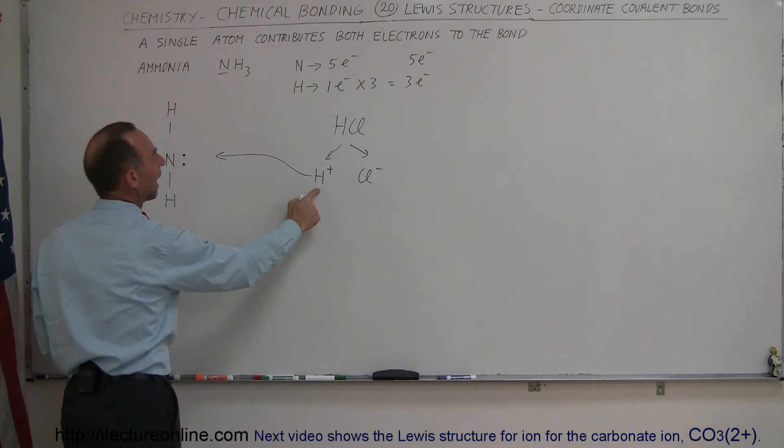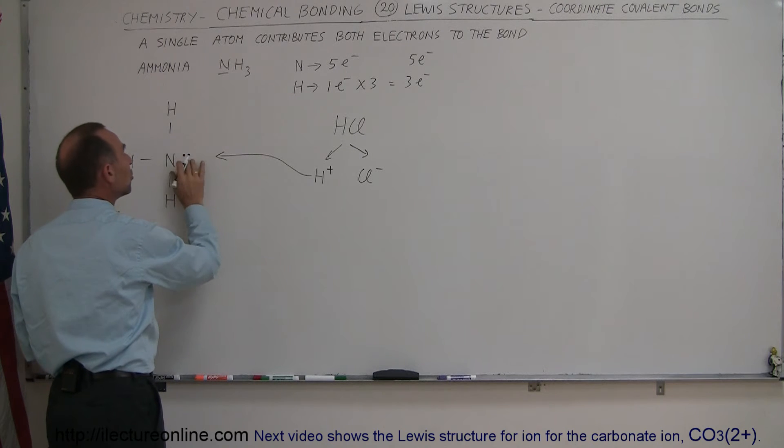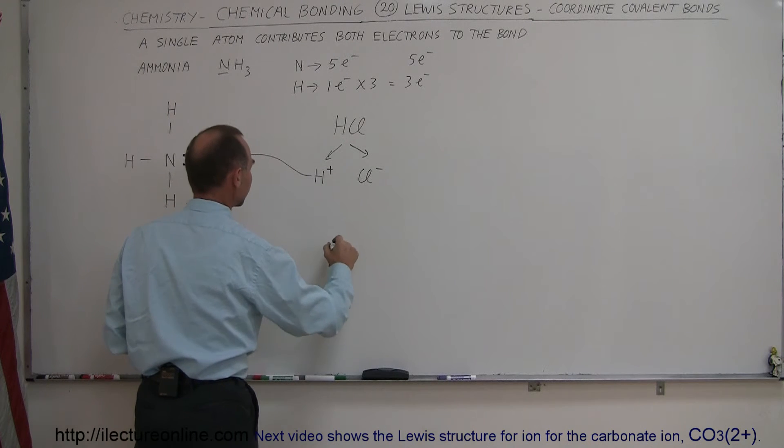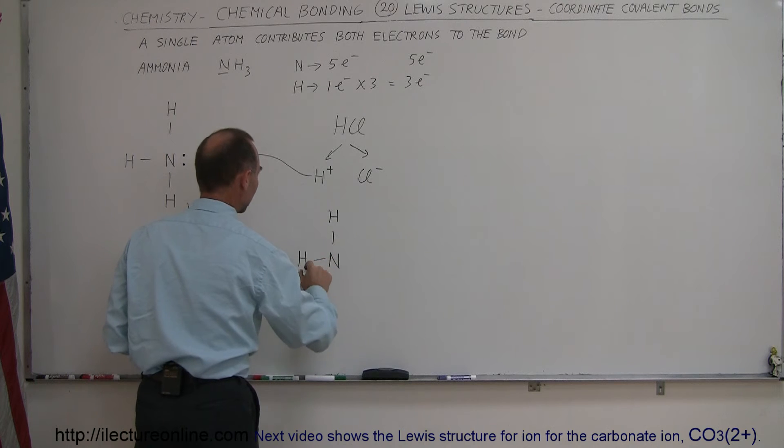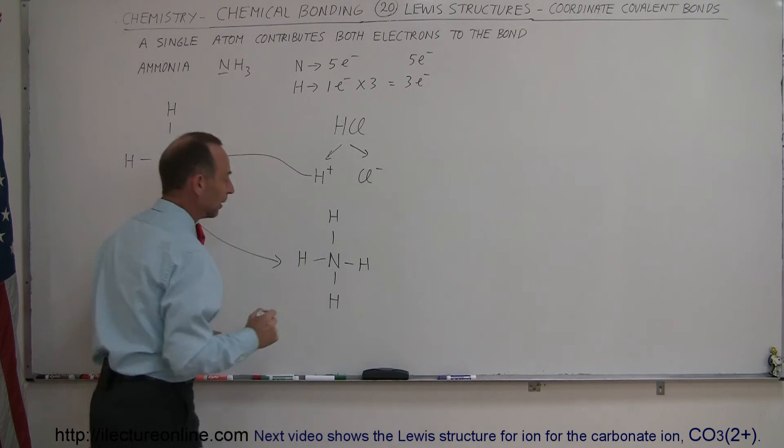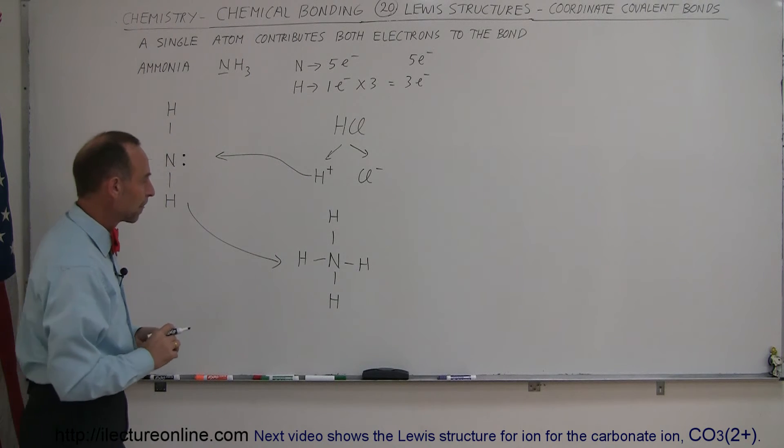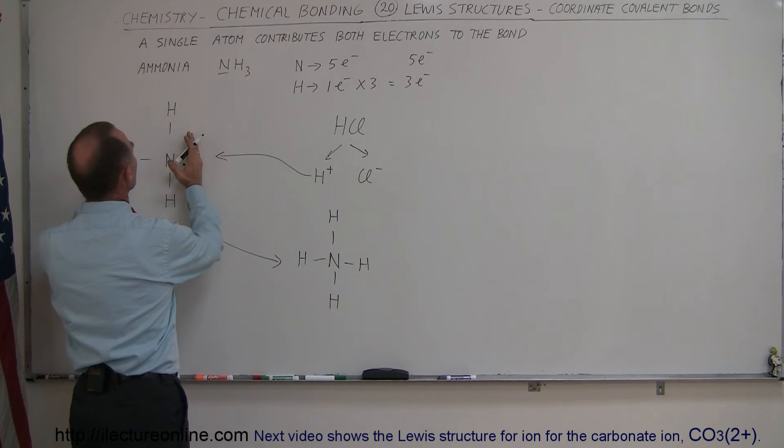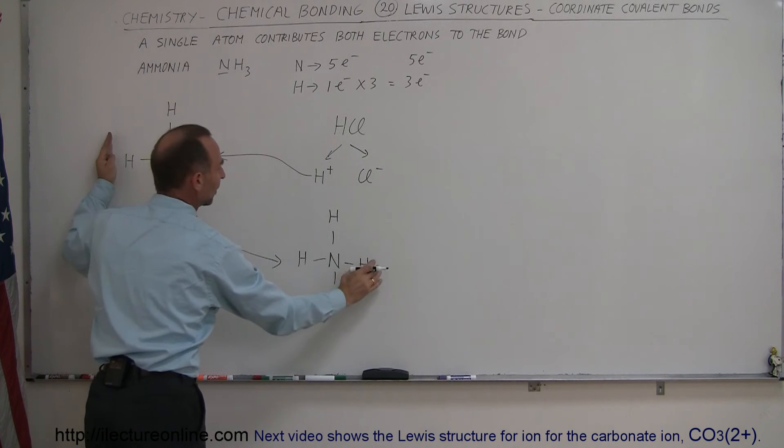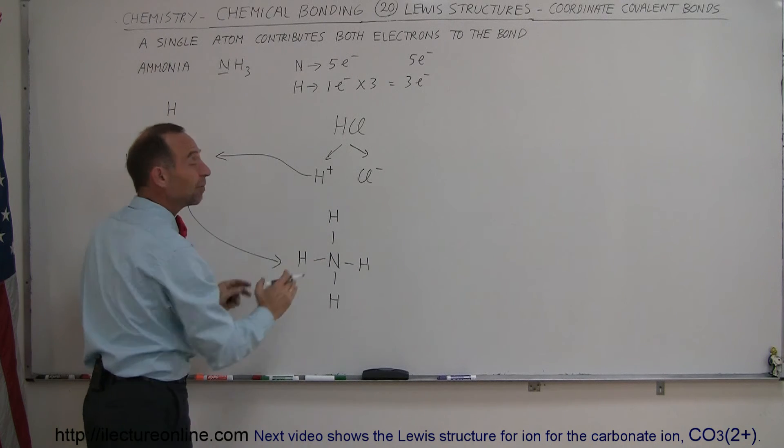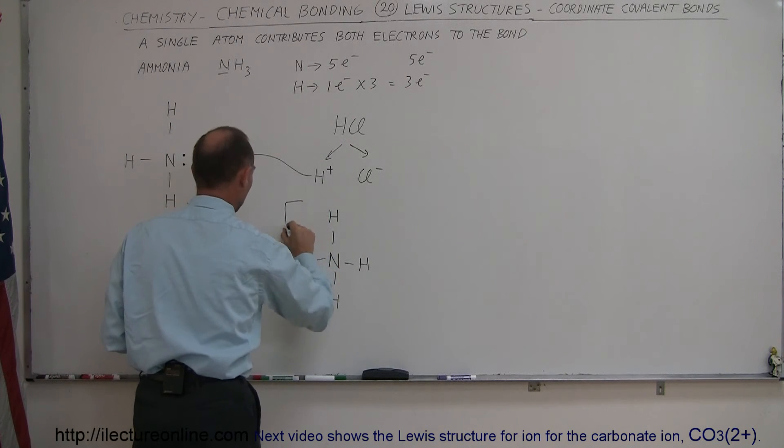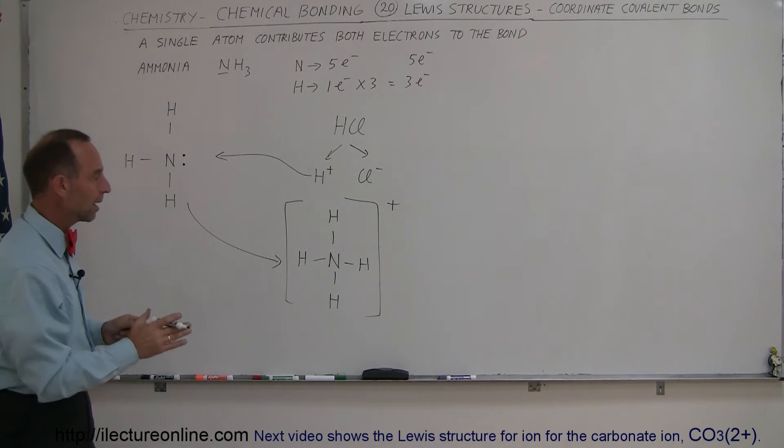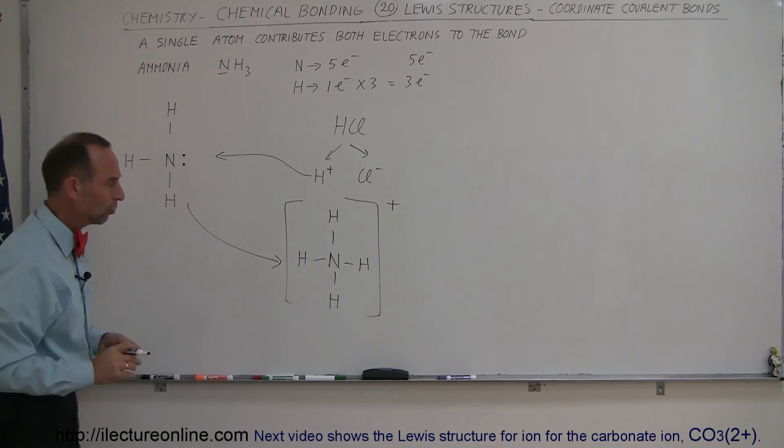But since hydrogen does not have any electrons to contribute to the bond, both of these electrons will be used to make a bond with the hydrogen. So when those two join together, you end up with something that looks like this. We have a hydrogen over here, a hydrogen over here, hydrogen over here, and a hydrogen over there. Now notice that this hydrogen came in with a positive charge. Ammonia had a neutral charge, so when you add something that has a positive charge to something that has a neutral charge, this becomes a positive charge ion. So the proper Lewis structure for an ion is to draw it like this with the ion's charge on it.